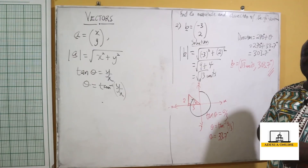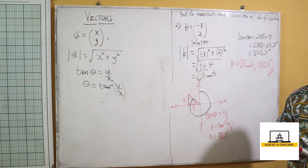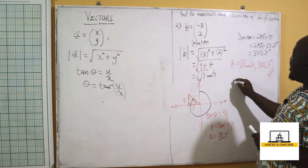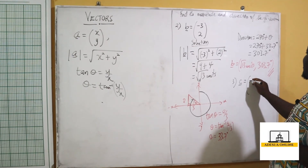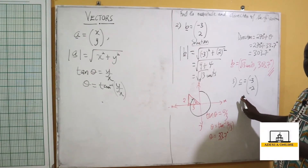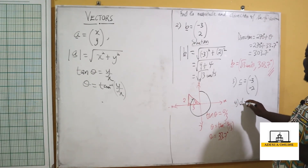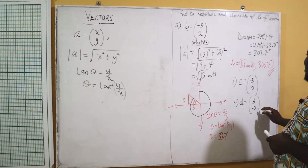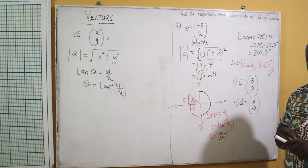I'm going to leave some practice examples on the board so that you can try on your own and solve for the magnitude and direction of those vectors. The next question is: if I have a vector c equal to negative 3, negative 2, calculate the magnitude and direction. And number 4, vector d equals 3, negative 2 — calculate the magnitude and direction of these two vectors. Then we continue with the class.